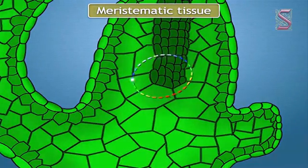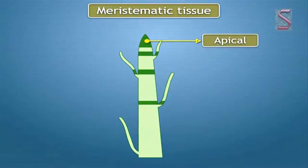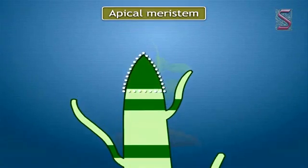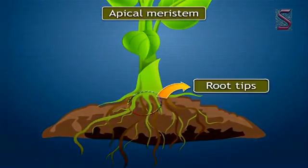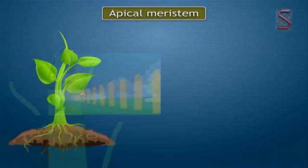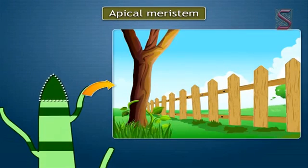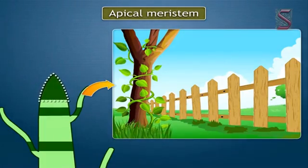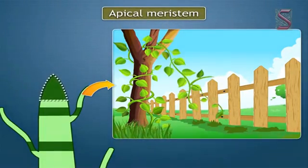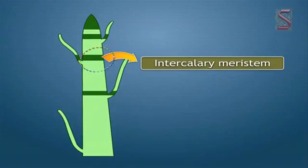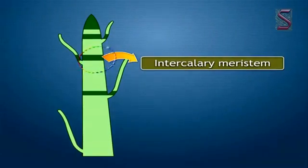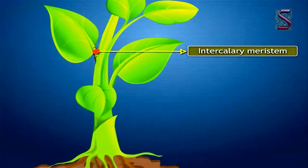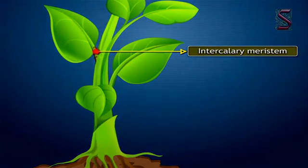Depending on the region where they are present, meristematic tissues are classified as apical, lateral, and intercalary. Apical meristem tissues are found in root tips and stem tips. They increase the length of the plant — the primary growth of the plant — that is, the growth in length, happens because of apical meristem tissues. Intercalary meristem tissues are found between mature tissues, and they occur at the base of the leaves or at the internodes.